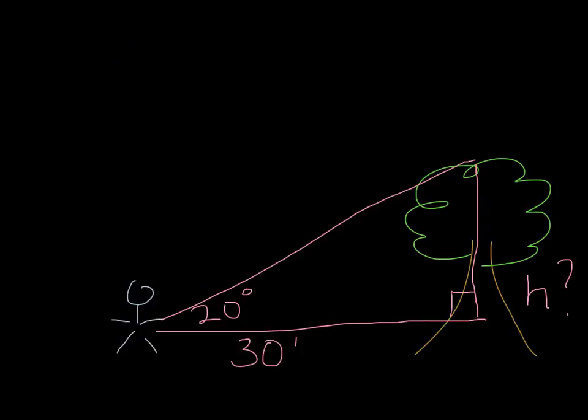If you're standing 30 feet away from a tree and are looking at the top of the tree at a 20 degree angle, how tall is the tree? So you turn it into a right triangle, you've got an opposite side h, you've got an adjacent side 30, and you've got an angle 20. It means you want to use tangent.